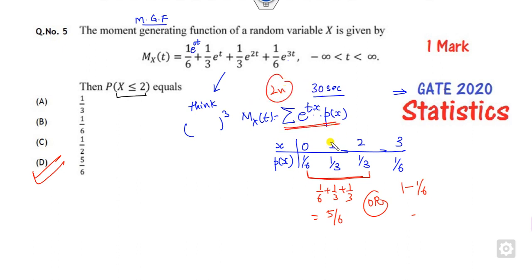You have to convert this into this tabular form. The right answer is 5/6.